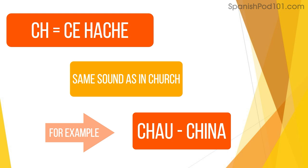Sometimes the H appears in the middle of a word, like 'zanahoria' (carrot). You can see it's in the middle of the word but it's as if it doesn't exist — we only write it. The only exception is if we have C-H together, which has a CH sound, just like in English. Por ejemplo: chau, china.